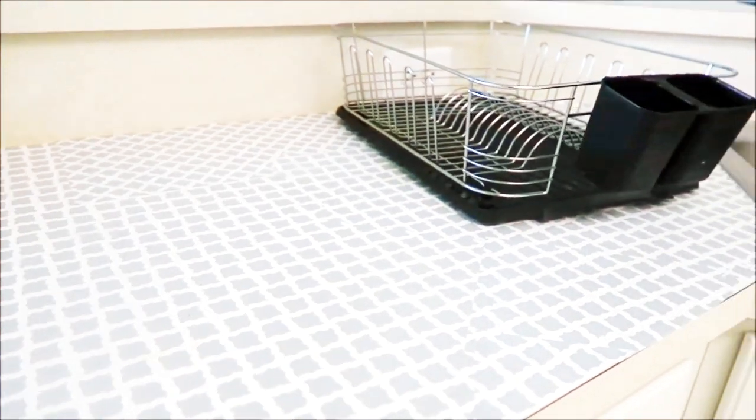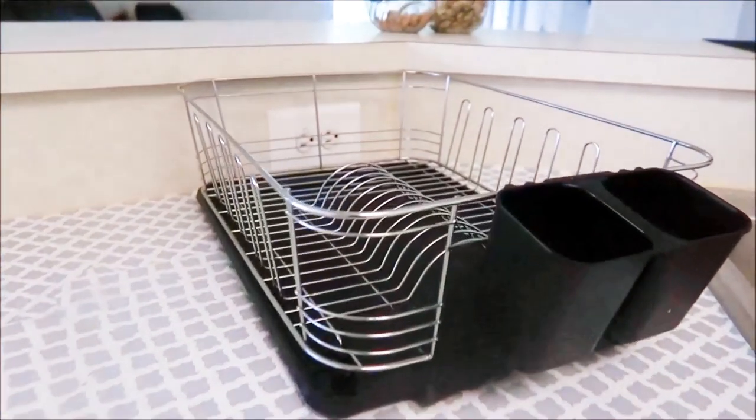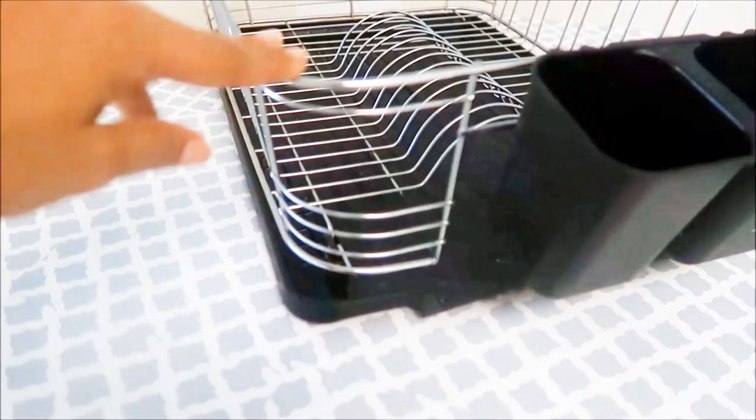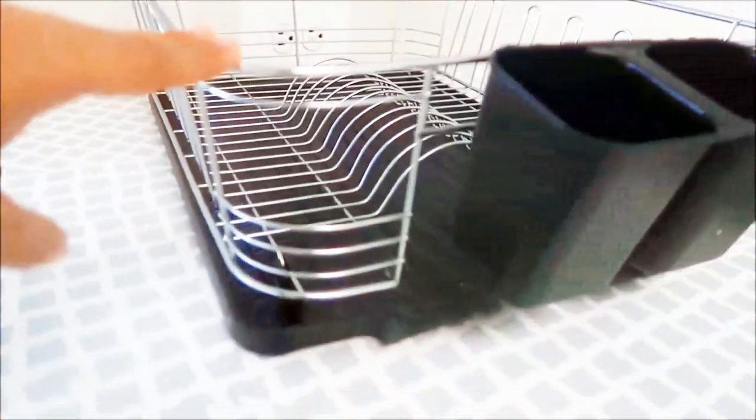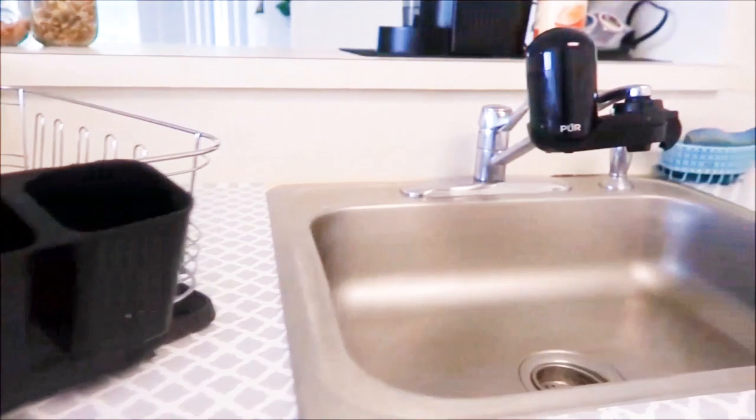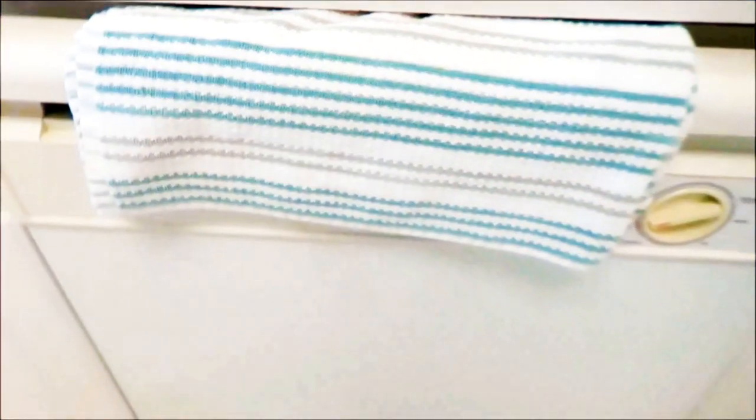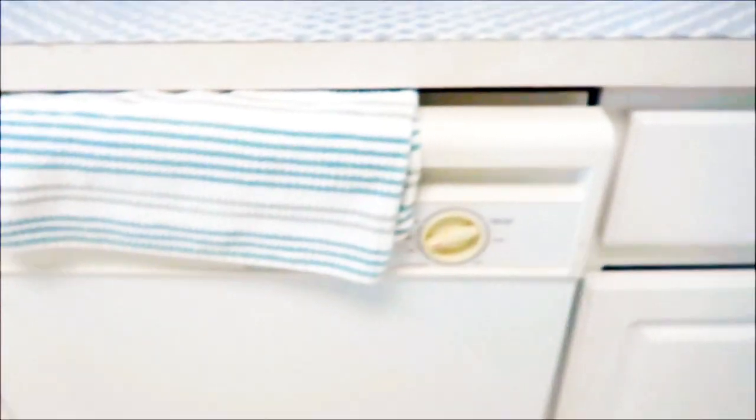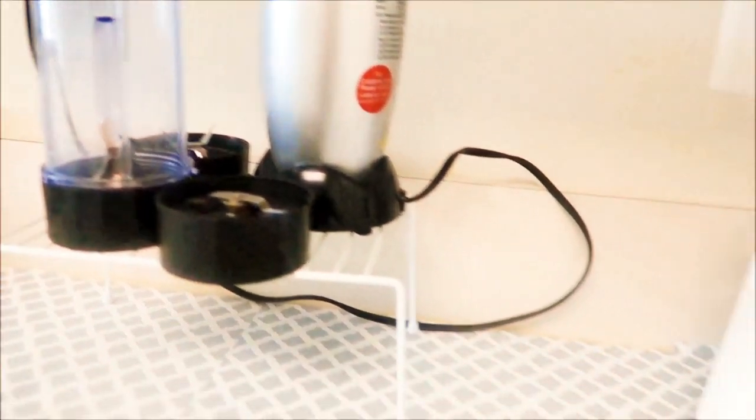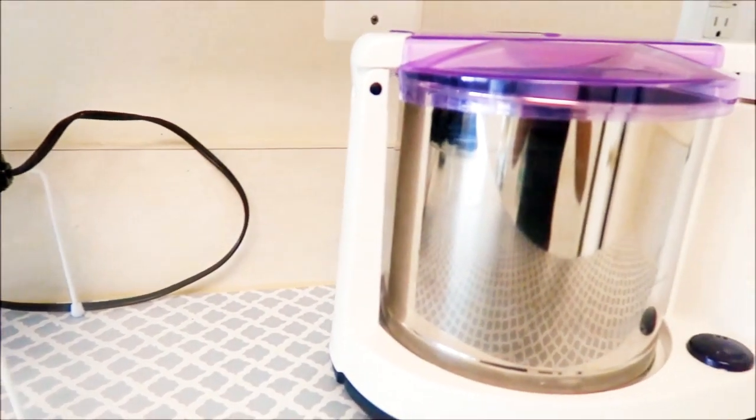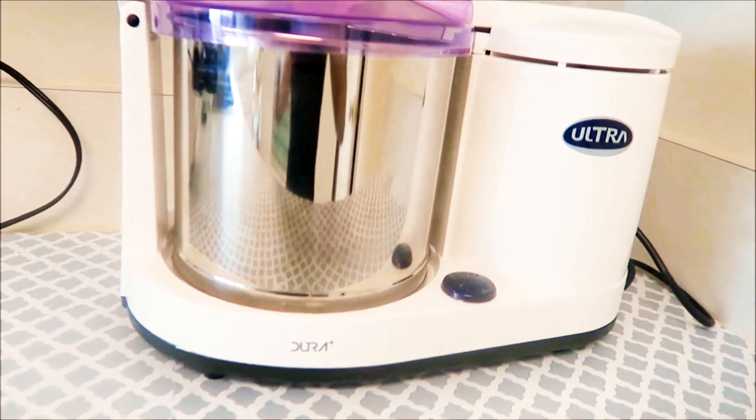Here I have the dish drying rack, which is empty now as I just kept the dishes back in the cupboards after cleaning them. I have my sink where I do the dishes, then we have the dishwasher, though I don't use it that frequently. I prefer to do the dishes with my hands. Only when I have guests over at my place I run the dishwasher. Then I have my blender here, and here I have my grinder which I use for making the idli dosa batter.